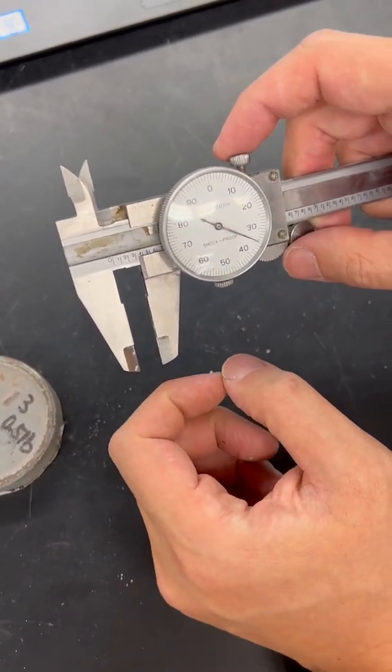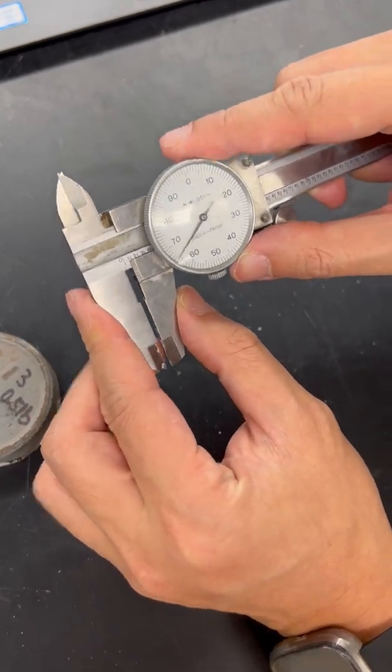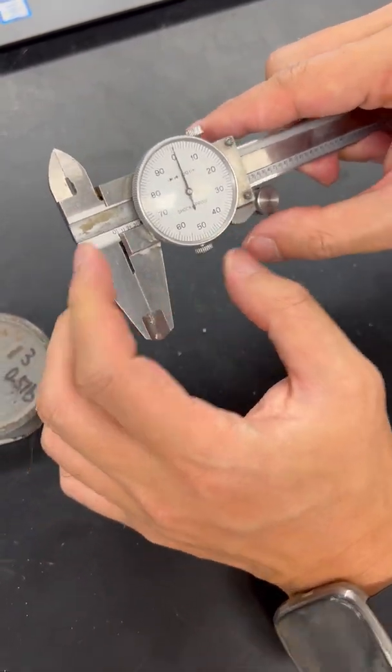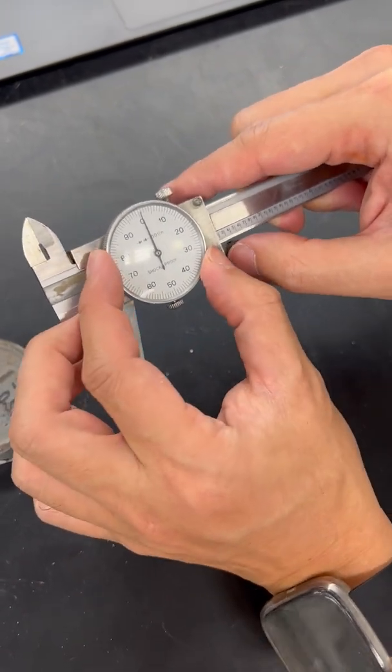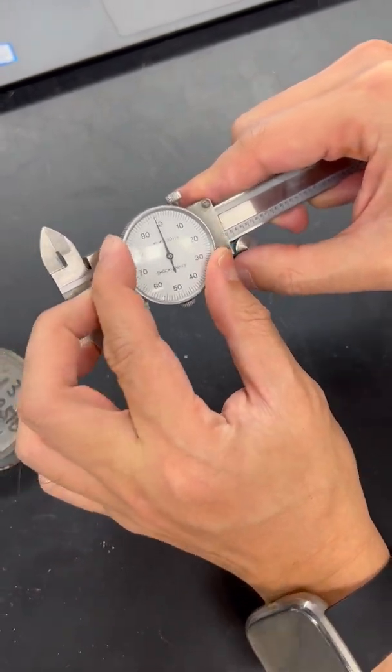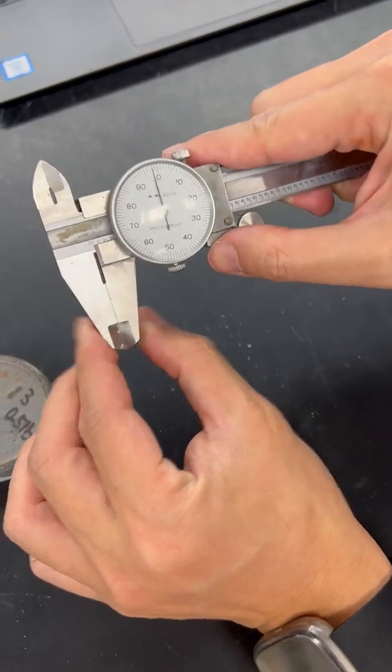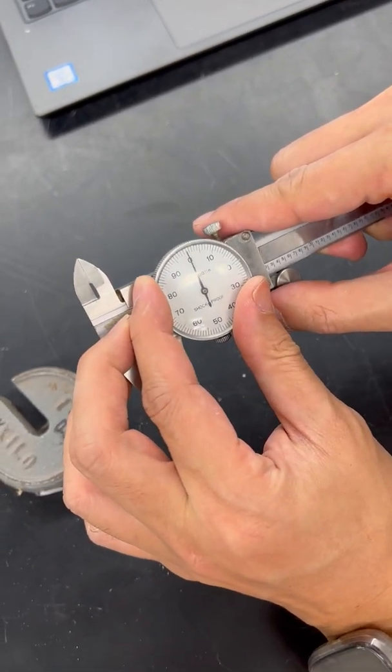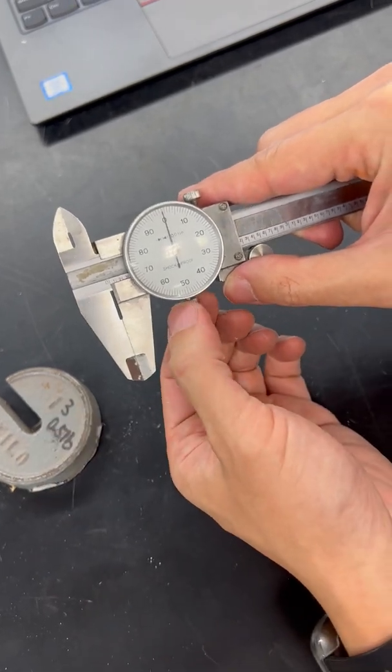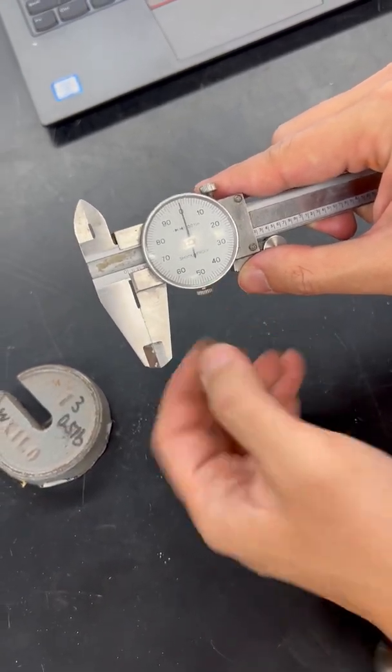Before we make any readings, first we need to make sure we start from zero. We can turn the dial here, so we need to adjust it. We close the gap and make sure the dial side is zero, and we can use this pin right there to lock the dial so after we lock it, this won't be moved anymore.